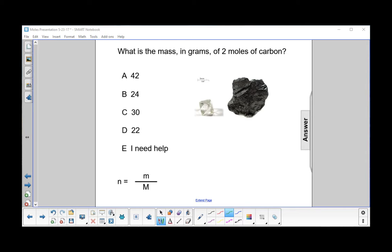What is the mass in grams of two moles of carbon? What we're looking for here is little m. So m equals the number of moles times the molar mass.